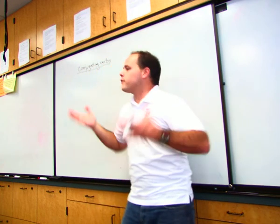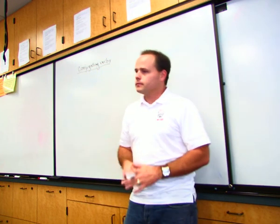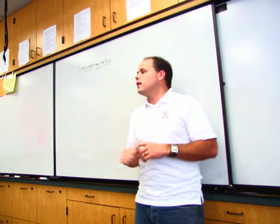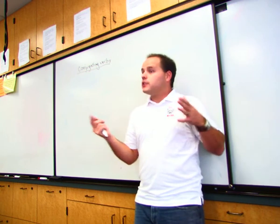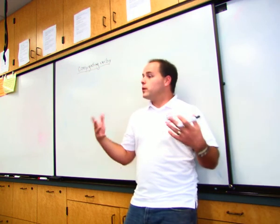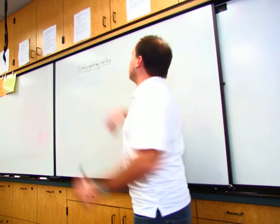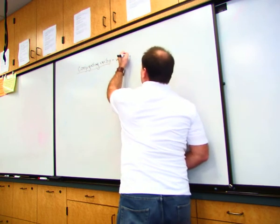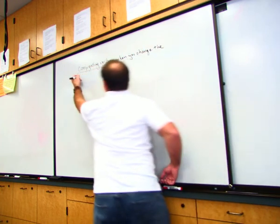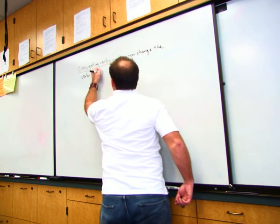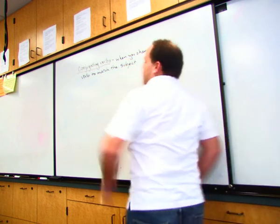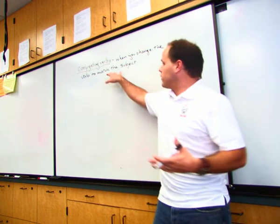Conjugating verbs. A verb is what part of speech? What kind of word is a verb? Action. It's an action word most of the time. It can also be a linking verb as well. An action is something that somebody or something does. In which case, the object that is performing or doing the verb is the subject. So conjugating a verb is when you match, when you change the verb to match the subject.